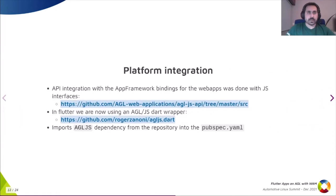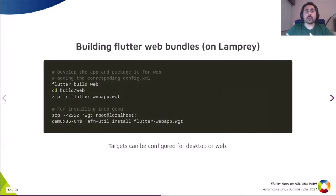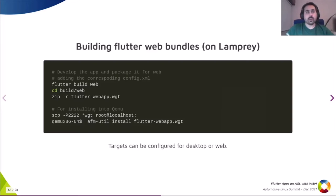So the instructions for bundling web apps and running them with the HTML5 image are for the Lamprey version. Once the WGT widget is created, if you have a QEMU image for instance, that bundle can be directly copied into the QEMU image and installed with 'afm-util install', the same way you would for any other web app or native application. To describe the structure of the bundle, it's necessary to include a config.xml file.